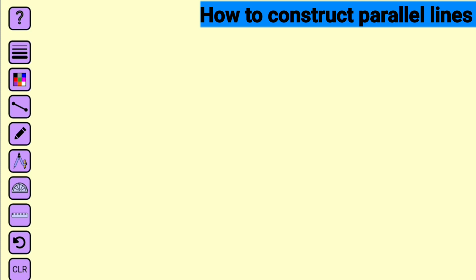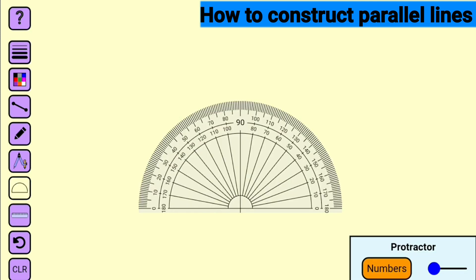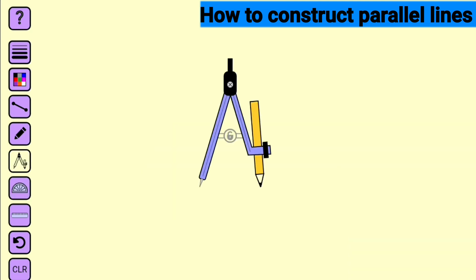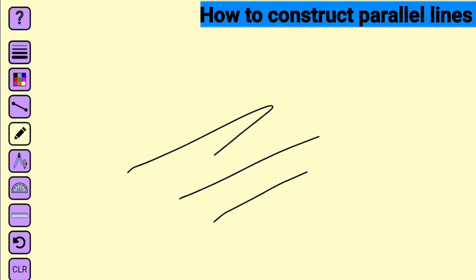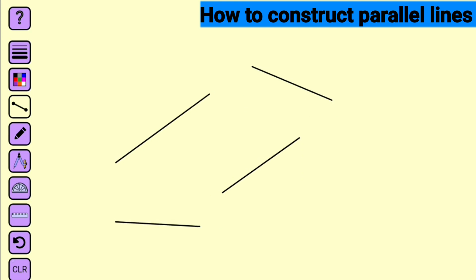There are different tools for constructions, but we have the basic ones here. You can see we have the ruler for measuring lines and drawing lines as well. We have a protractor for measuring angles. We have a compass for measuring angles, constructing angles, bisecting angles, and so on. We have a pencil, and we have line segments.